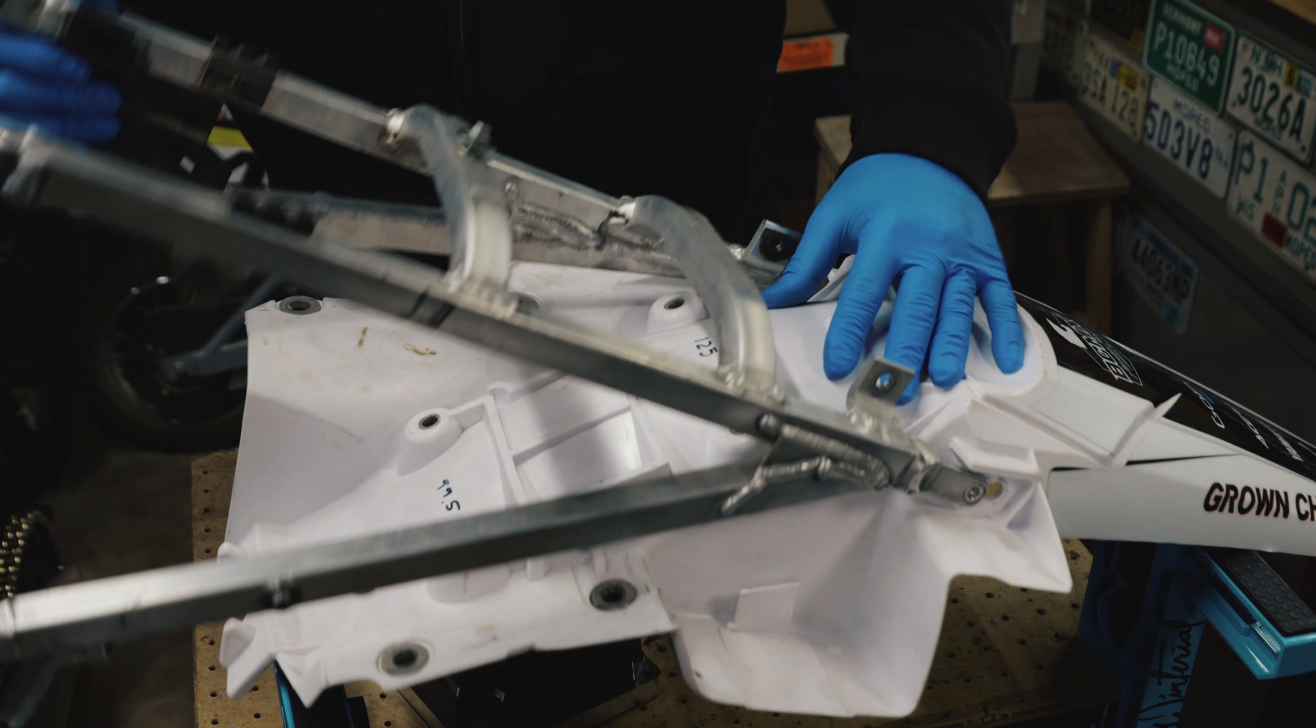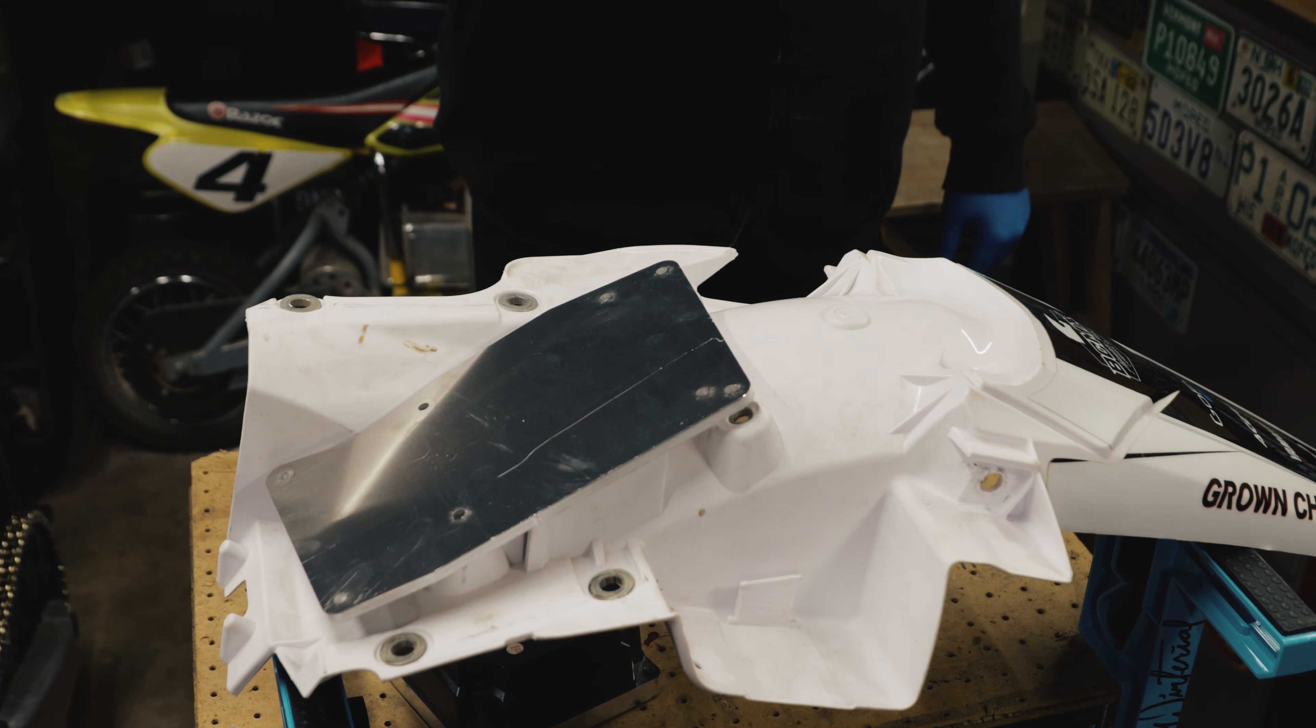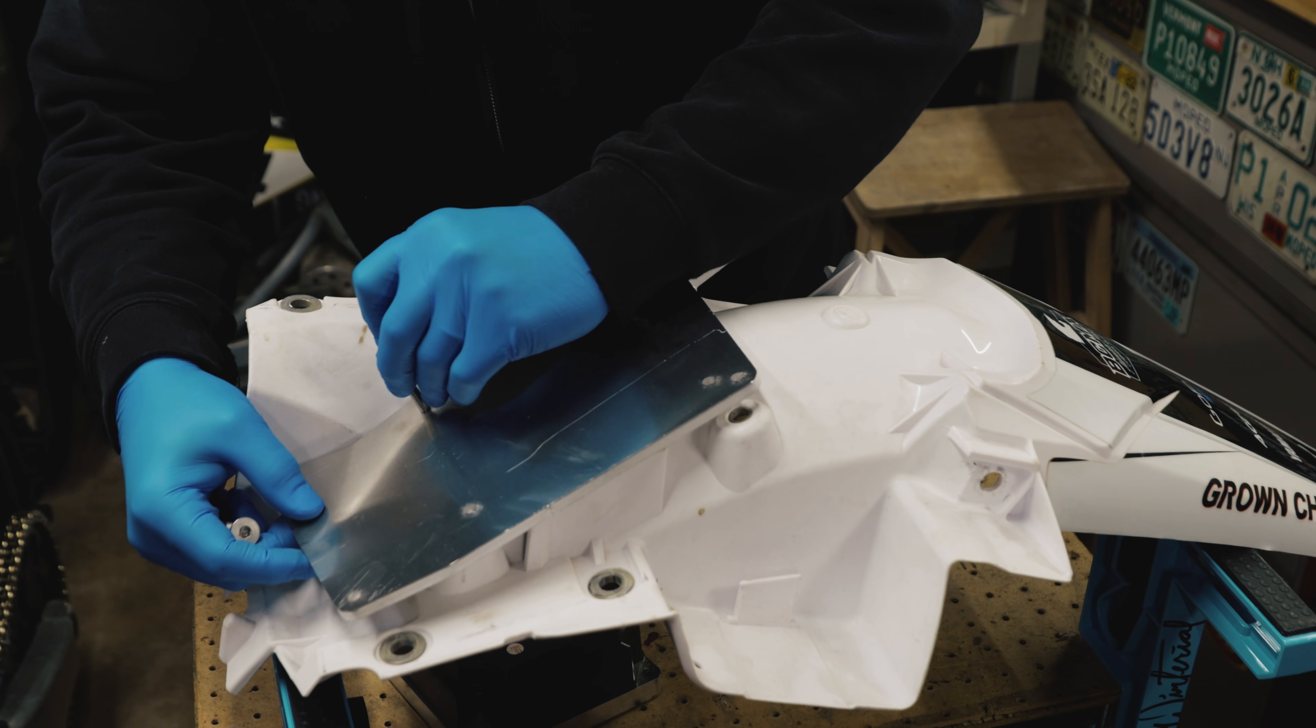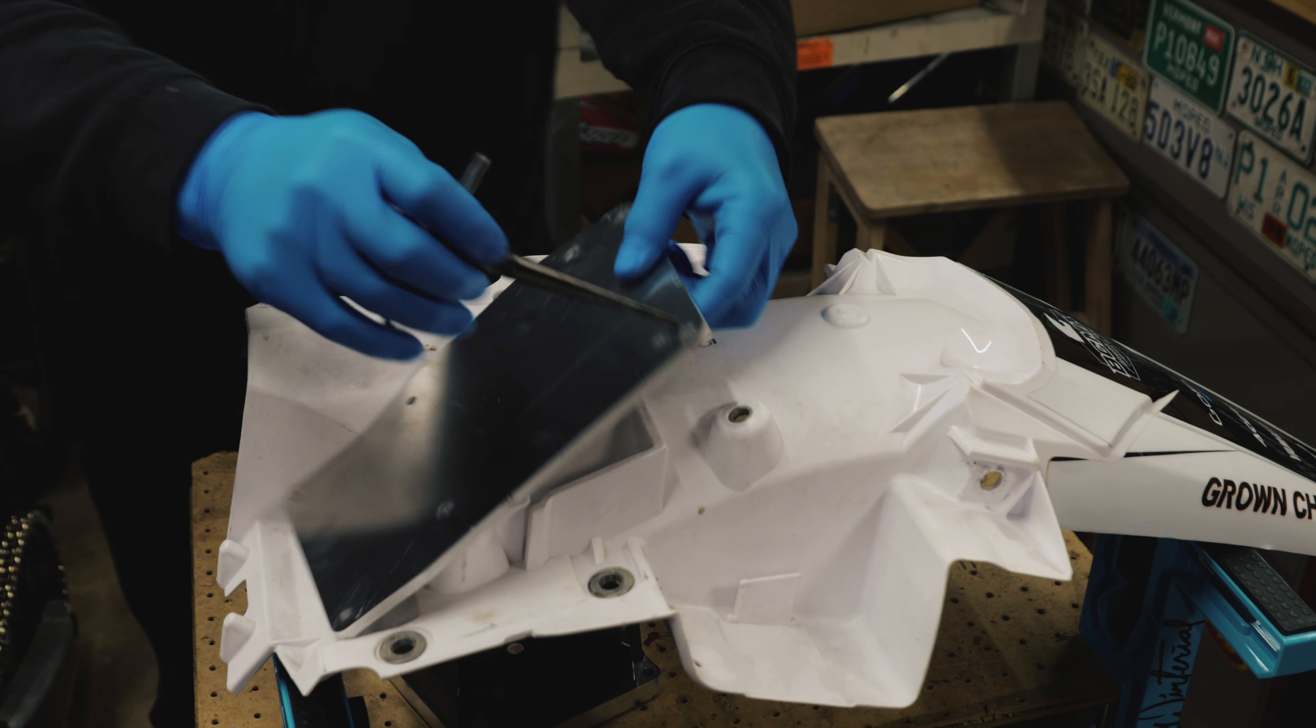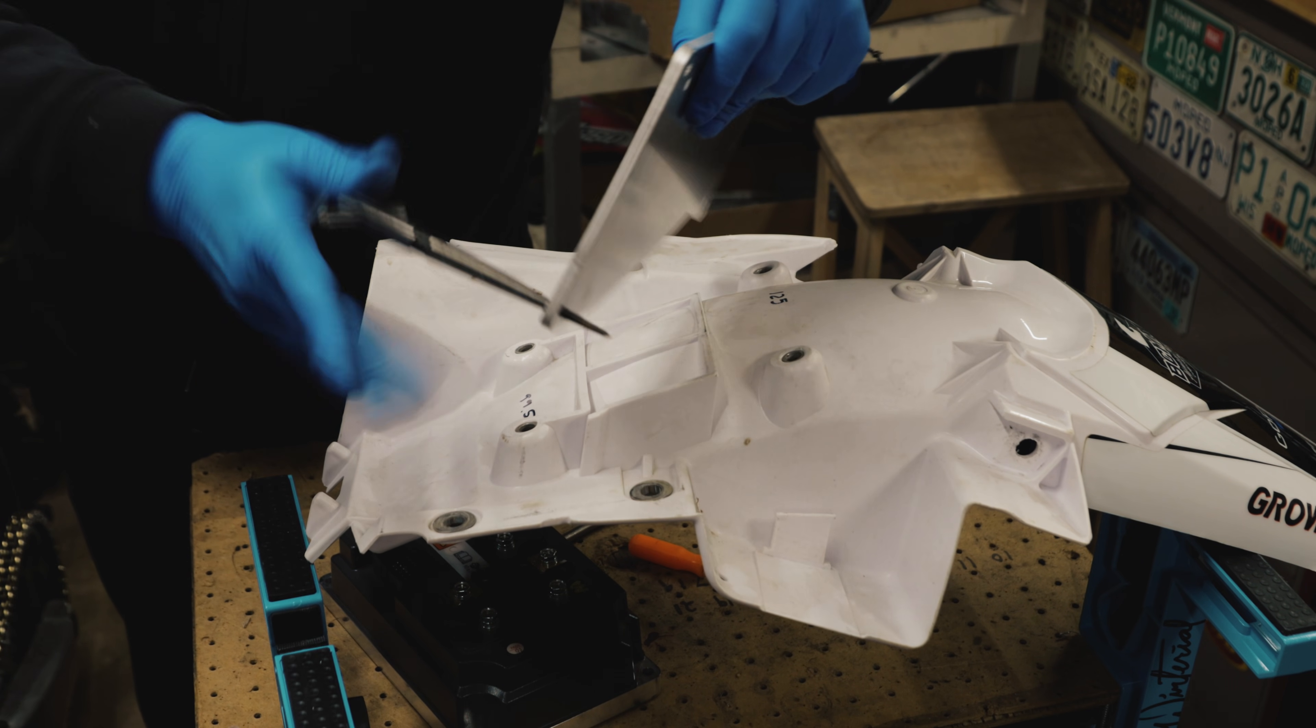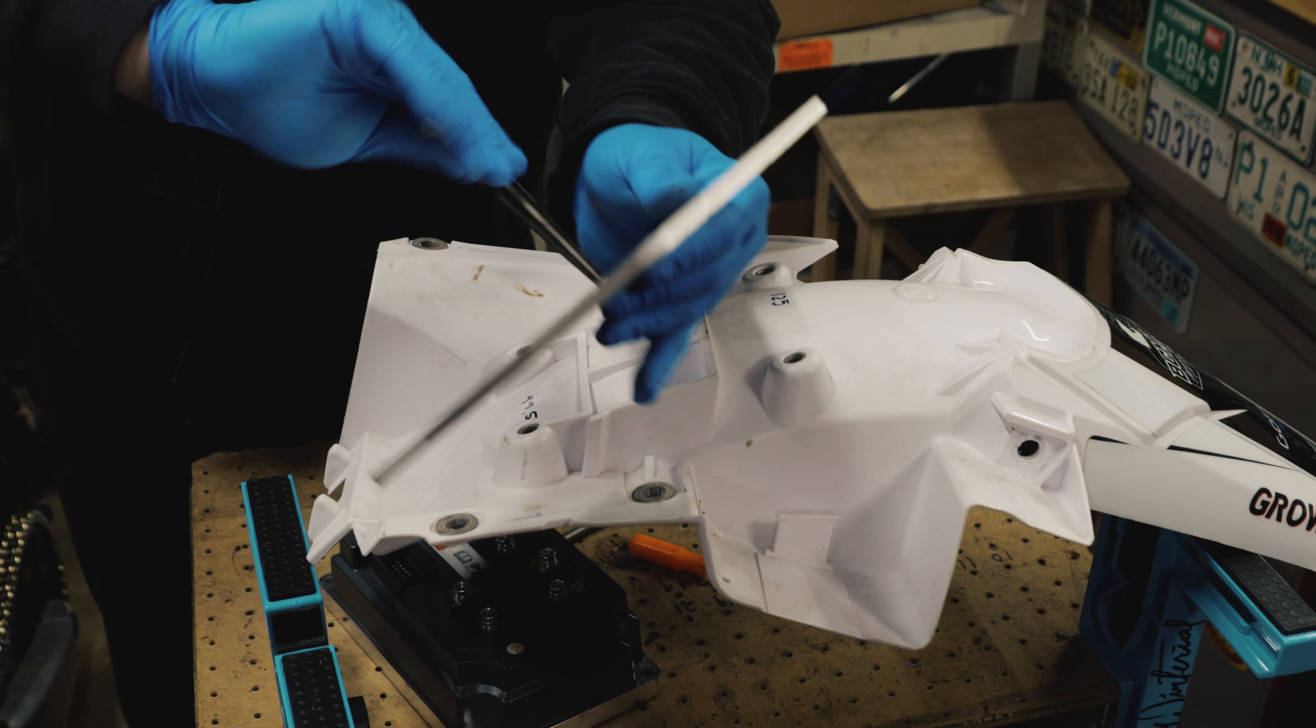Now my original plan was to do M8 countersunk bolts right here because these are M8s. But I actually think I'm going to do M6 because that will give me some wiggle room. I'm going to clean these up real quick. I'm just going to use this little guy. It's pretty simple. I did not pay the extra for them to clean this up just because it was cheaper just to have them make it.